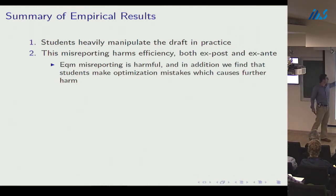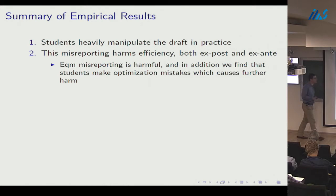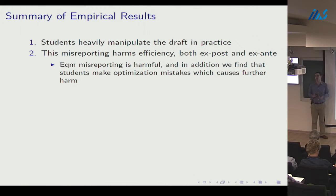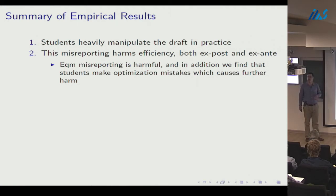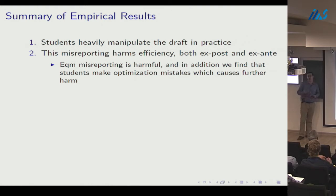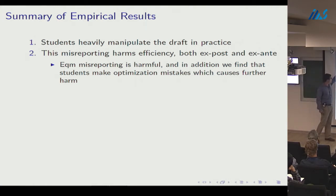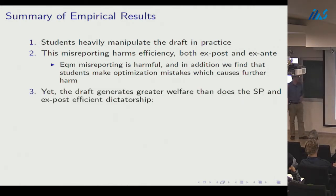Second, this misreporting harms efficiency both in ex post Pareto efficiency — causing Pareto-improving trades to be left on the table — and in ex ante welfare. Misreporting harms efficiency in two ways: equilibrium misreporting itself harms efficiency, and students also make optimization mistakes causing additional losses. This represents a cost of using a non-strategy-proof mechanism: if agents can't play the Bayes-Nash equilibrium, that failure is another source of efficiency loss.